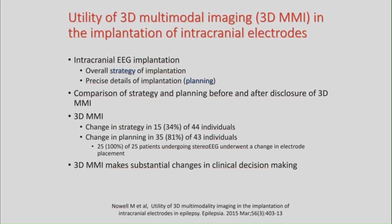Moving on to depth EEG studies and how 3D multimodal imaging can help in electrode placement. Noah and colleagues from the National Hospital in London described that electrode planning involves an overall strategy followed by detailed implantation planning. They compared strategy and planning before and after disclosure of 3D multimodal imaging, finding a change in strategy in 15 of 44 individuals and a change in planning in 81% of 43 individuals. In the 25 patients who underwent stereo EEG, there was a change in electrode placement in all of them, concluding that 3D multimodal imaging makes a substantial change in clinical decision-making.